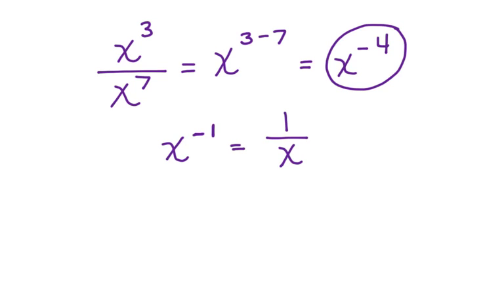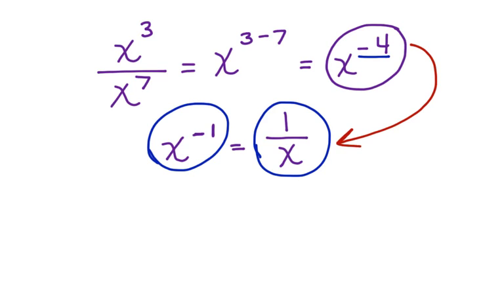So if I have x to the negative 1, or the negative 1st here, then I can change that to 1 over x. Whenever you have a negative exponent, you must rewrite it into this form for your work to be complete.